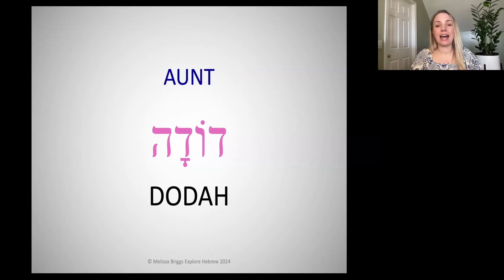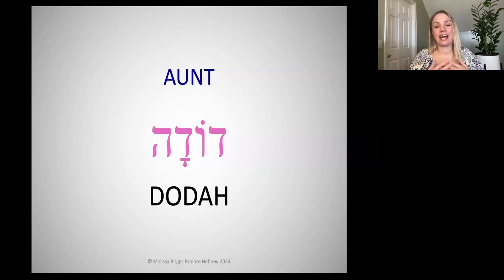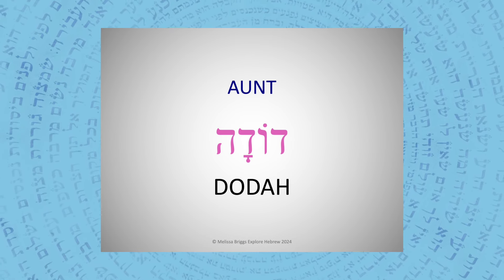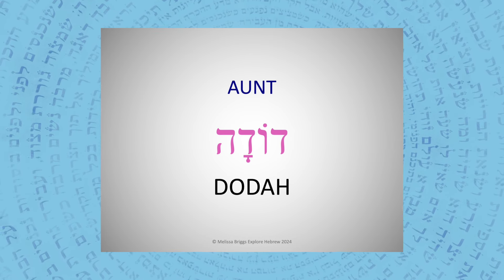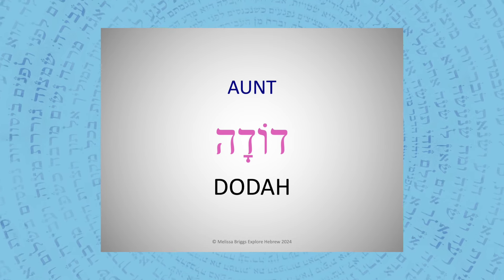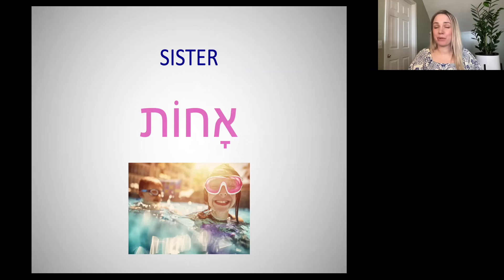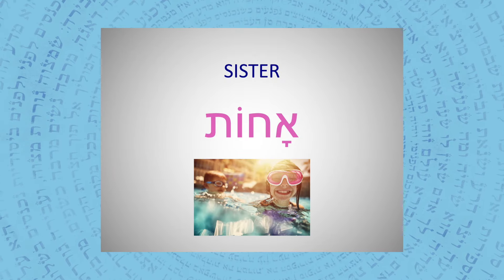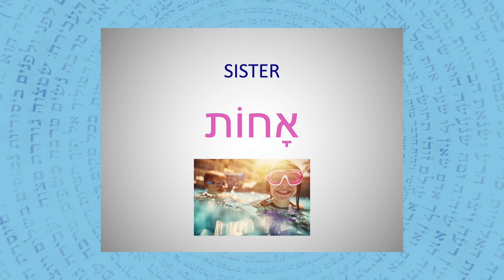What if I wanted to say 'I have an aunt'? Yesh li doda — I have an aunt. There is, to me, an aunt. And what if you wanted to say 'I do not have an aunt'? Ain li doda. What about sister? Do you remember how to pronounce the word for sister? Achot. How would you say 'I do not have a sister'? Ain li achot — I do not have a sister.